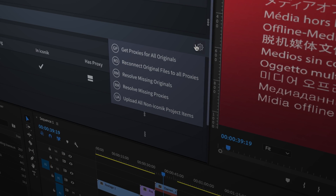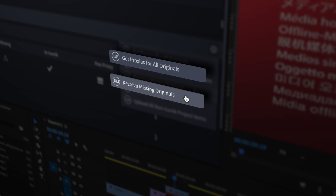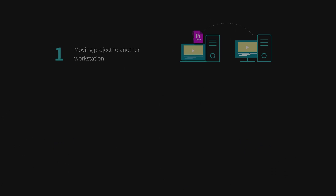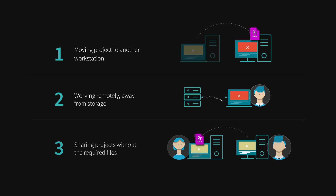The Iconic panel for Premiere Pro allows editors to easily resolve missing files in their projects. There are multiple reasons as to why a file could be missing. Maybe the project file was moved to another workstation where the file was not available, or perhaps an editor is working on their project away from the storage that has the project files. Missing files could also be a result of sharing a project with another user who doesn't have the files on their device.